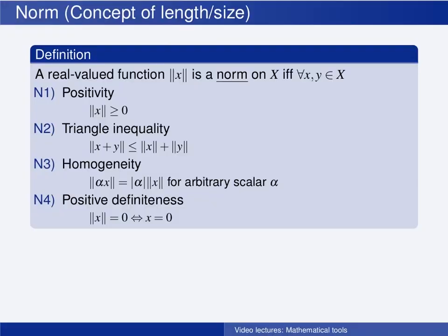The norm is a topological structure that gives us the concept of length or size of one element in the set. The definition says that a real valued function is a norm on the set X if and only if, for all elements X and Y in the set, the following conditions are satisfied. When going through these conditions, I will use the term length for the function to add some intuition. I could also have called it the size or the magnitude of the element.